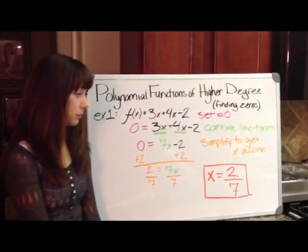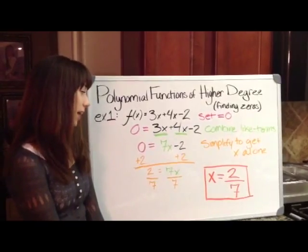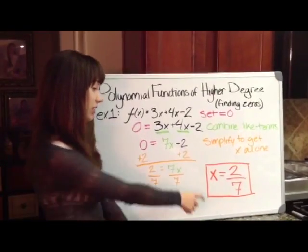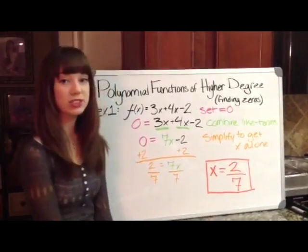So we put those together and we get 0 equals 7x minus 2. Our next step is to simplify to get x alone. So we add 2 to both sides then divide by 7 to get our answer which is x equals 2/7.